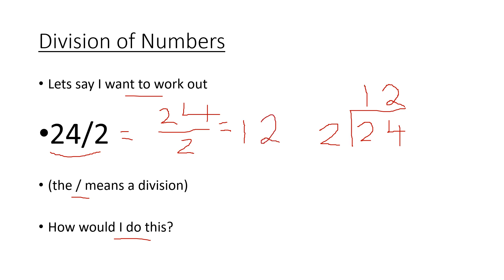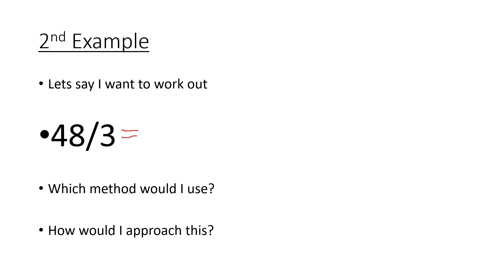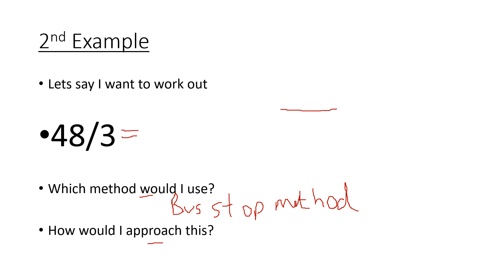Next: 48 divided by 3 — I'd use the bus stop method. As numbers get larger, counting up becomes time-consuming, which is why the bus stop method is better. 48 with 3 as the divisor outside. How many 3s go into 4? That's 1 with 1 left over. How many 3s go into 18? That's 6. So the answer is 16.